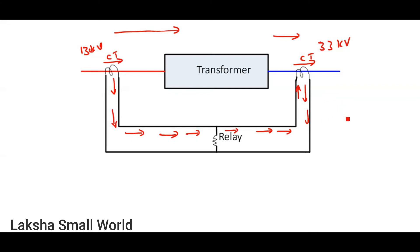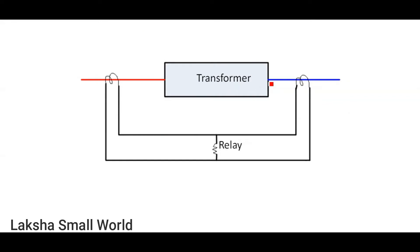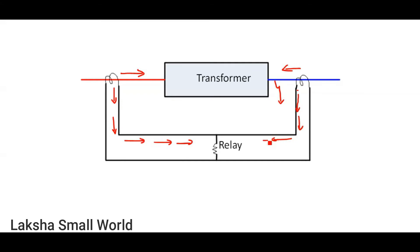In case there is any fault within the transformer, the current direction will reverse. Current will then flow in the opposite direction on the HV and LV sides, so the direction of current in the relay changes and current flows through the relay. The relay will then operate and give a trip signal to the circuit breaker. The circuit breaker will open the circuit and the transformer is safe.